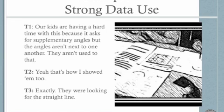Our kids are having a hard time with it because it asks for supplementary angles, but the angles aren't next to one another. They aren't used to that. Yeah, that's how I showed them too. Exactly. They were looking for the straight line. So they're having a little chat about why this test item was frequently missed. And they've already identified that the students were looking for a particular arrangement on the paper.